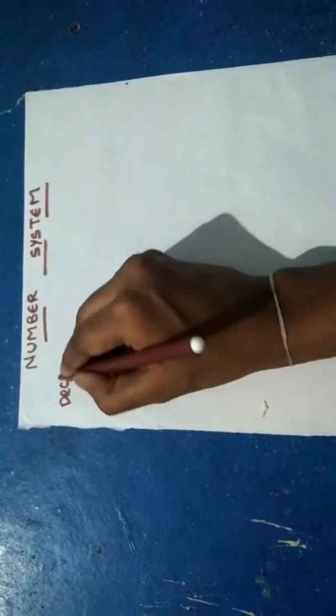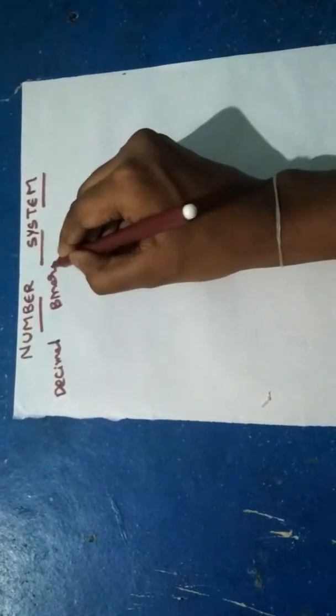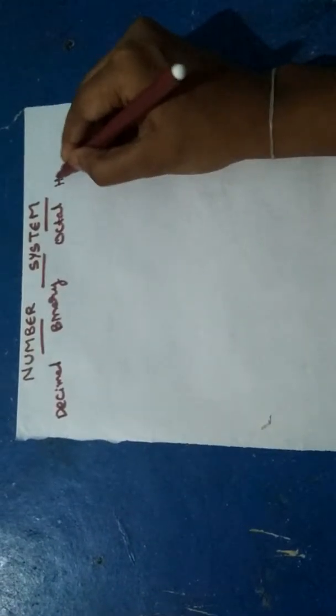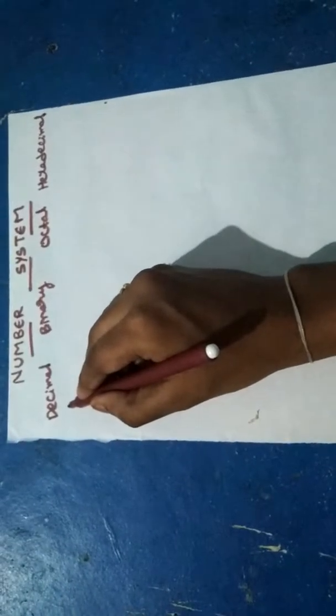Hi friends, today we are going to discuss number systems. There are four types of number systems: decimal number system, binary number system, octal number system, and hexadecimal number system. In decimal system we have numbers